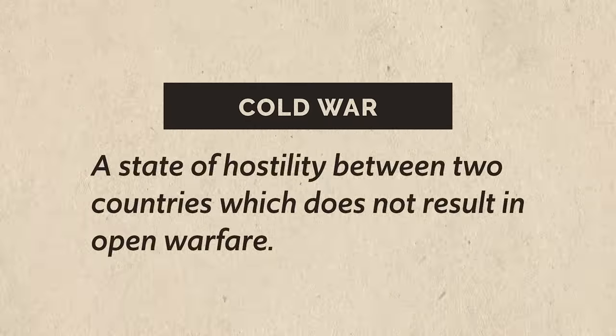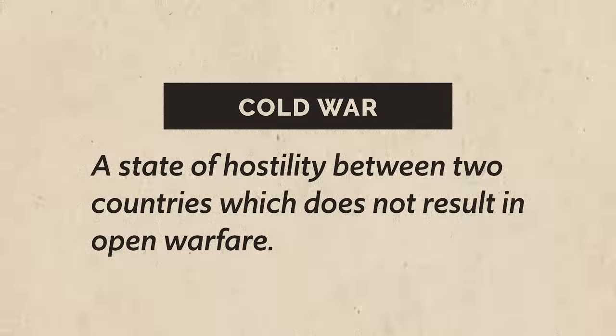Just by way of reminder: after World War 2 is over, the global balance of power really shifted into the hands of two states, namely the United States and the Soviet Union. These two superpowers locked arms in a Cold War that would last over 40 years. A Cold War is just a state of hostility between two countries which does not result in open warfare. For this video, let's ask why these two powers were in tension, how they fought without actually fighting, and then consider the Non-Aligned Movement.